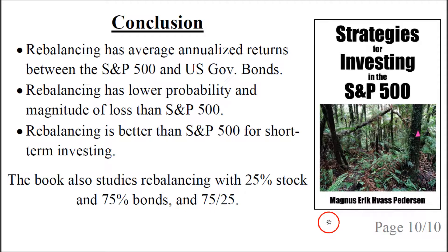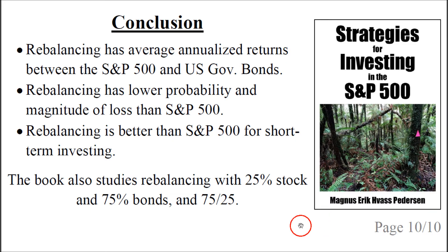The talk was based on this book — you can click on the image or the link below the video. The book also contains studies for 25% stock and 75% bonds, and the inverse 75% stock and 25% bonds, so you can see what the performance is for those strategies.